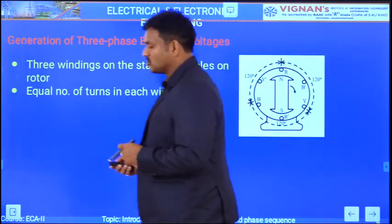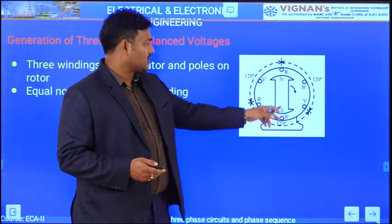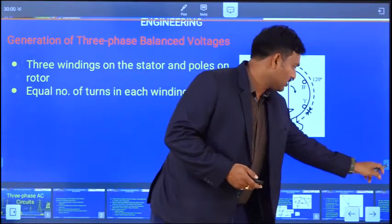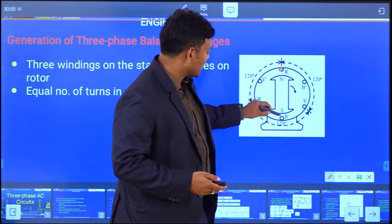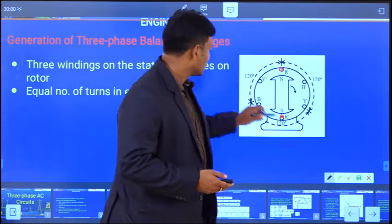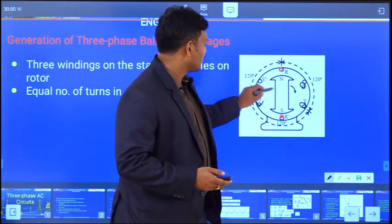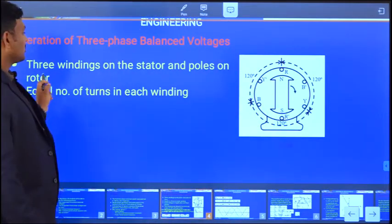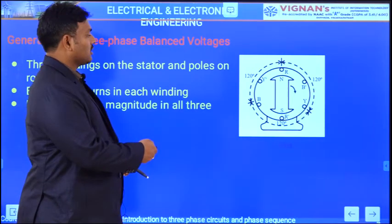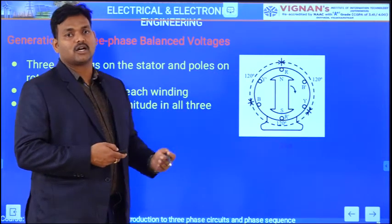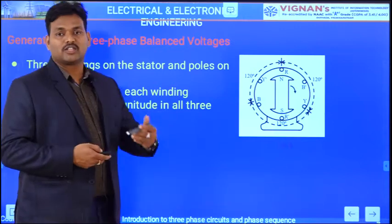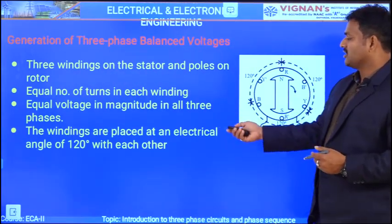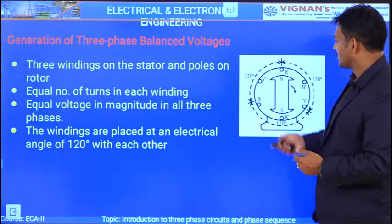To generate three-phase balanced voltages, you need a setup with a salient pole and an armature having three windings — R-R dash, Y-Y dash, and B-B dash — placed mutually 120 degrees apart electrically. These three windings on the stator have equal number of turns to produce equal voltage magnitude in all three phases. The poles are on the rotor. The windings are electrically displaced by 120 degrees from each other, and therefore the three-phase voltages in each phase are also at 120 degrees from each other.